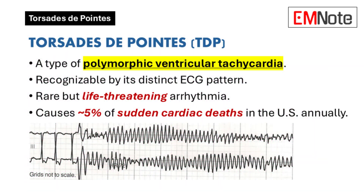Torsades de Pointes is a form of polymorphic ventricular tachycardia characterized by a distinct electrocardiographic pattern. This cardiac arrhythmia is uncommon but carries a high risk of fatality. It is responsible for approximately 5% of the 300,000 annual sudden cardiac deaths in the United States.